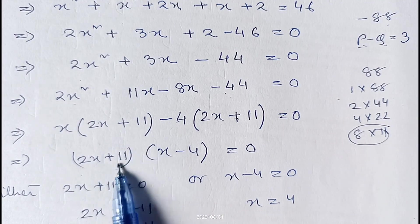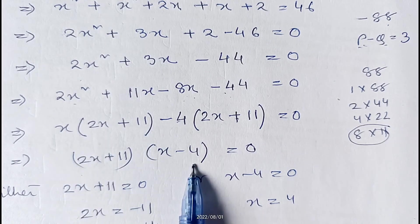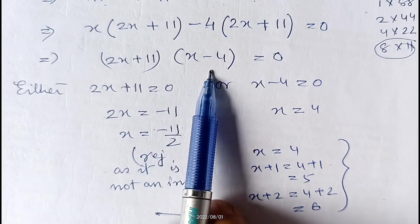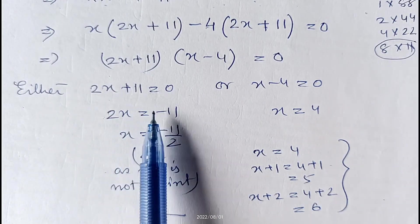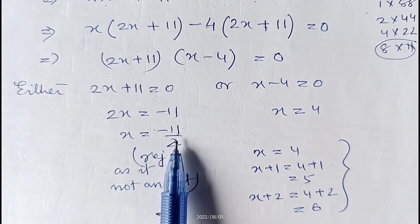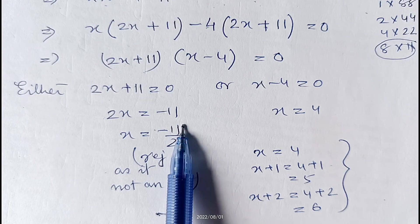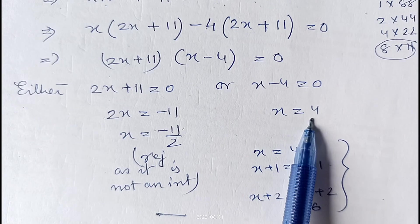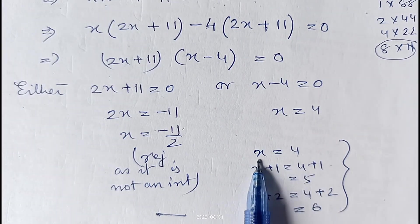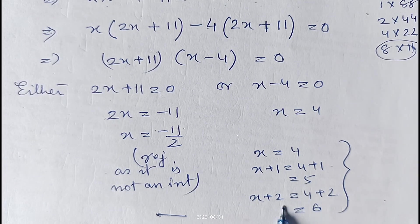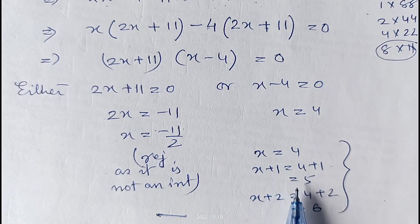Taking (2x + 11) common, we get (2x + 11)(x − 4) = 0. Either 2x + 11 = 0, giving x = −11/2, or x − 4 = 0, giving x = 4. Since we need consecutive positive integers, the negative value is rejected. So x = 4. The first number is 4, the second is x+1 = 5, and the third is x+2 = 6. Therefore the required integers are 4, 5, and 6.